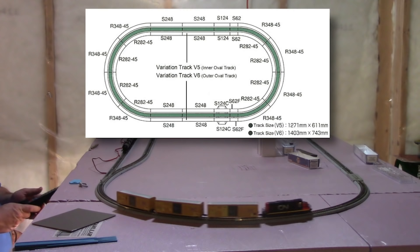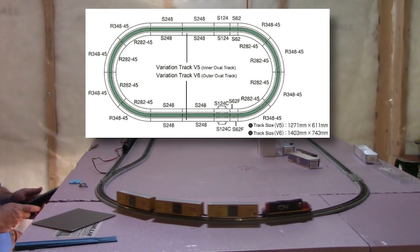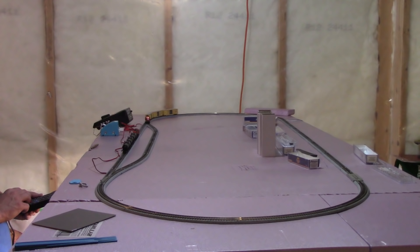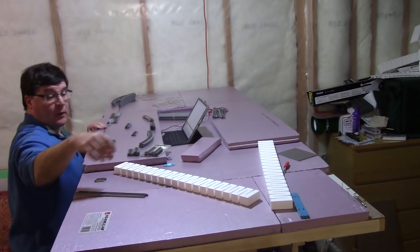The V6 outside loop set uses 348 millimeter or 13 and three quarter inch radius curves. While the V5 inside loop set uses a tighter 282 millimeter or 11 inch curves. You don't necessarily have to have these loops connect to each other, especially if you're doing something like a passenger service layout. But Kato makes a double crossover or a single left and right crossover tracks that can easily move trains from the inner to the outer loop.